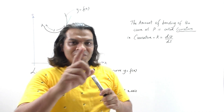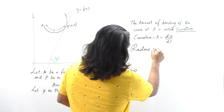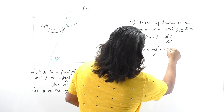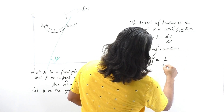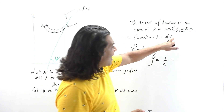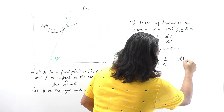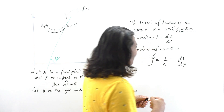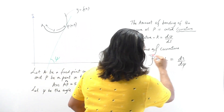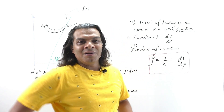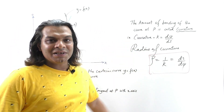Therefore, the radius of curvature ρ = 1/k, that is, 1/(dψ/ds), which is nothing but ds/dψ. So the radius of curvature is defined as ρ = 1/k = ds/dψ.